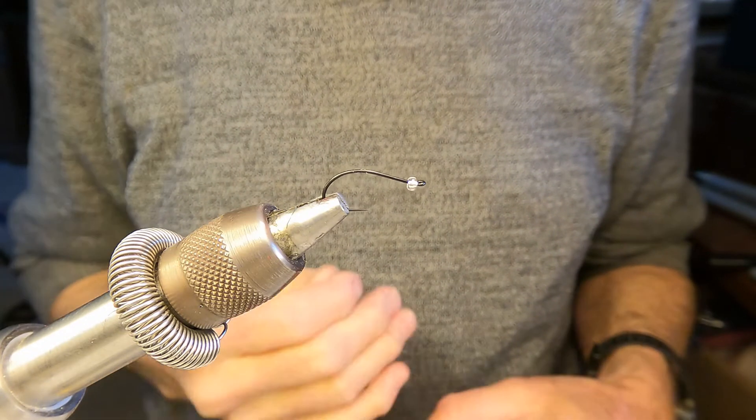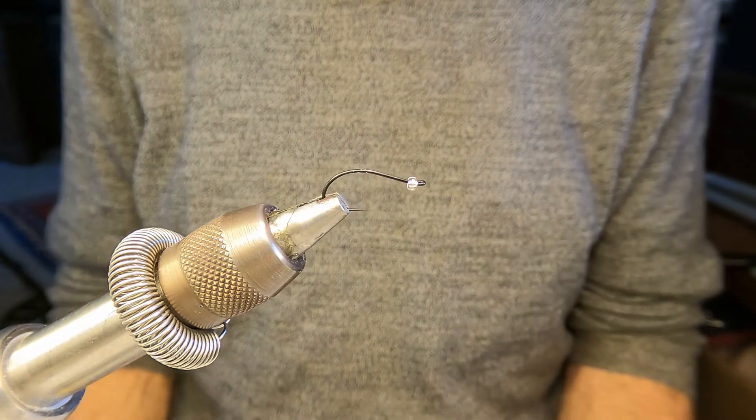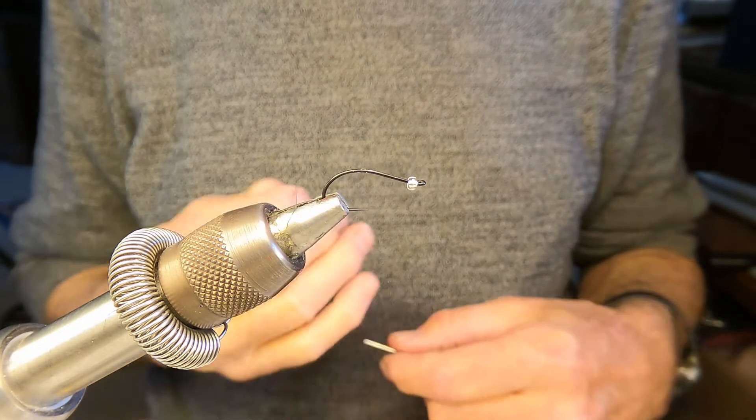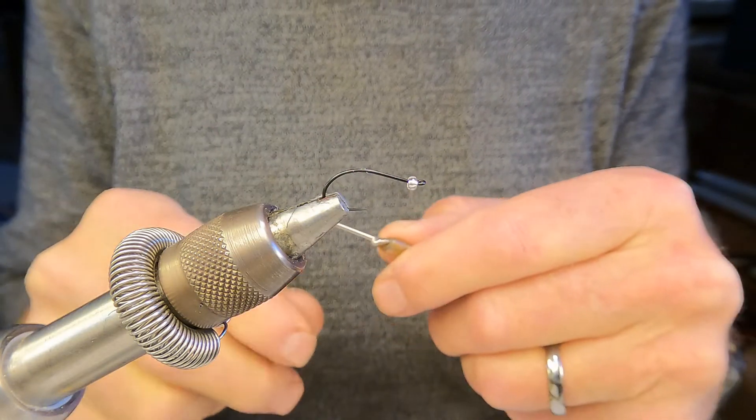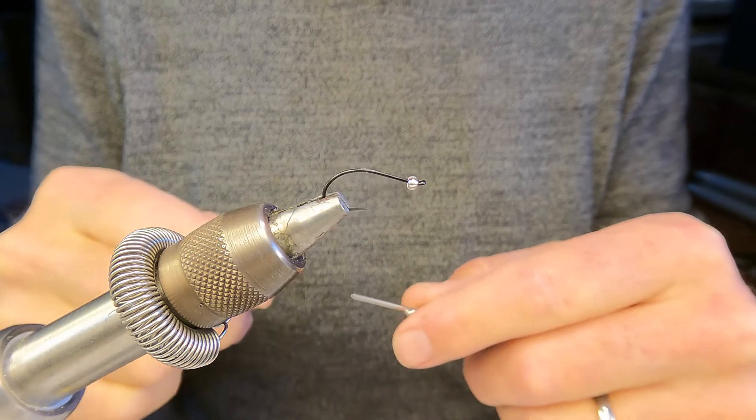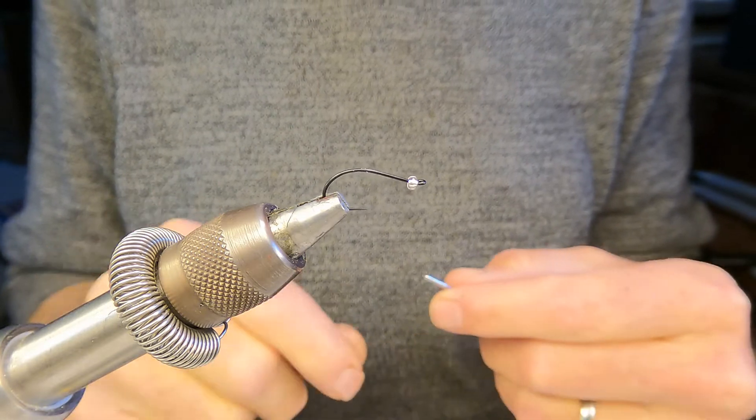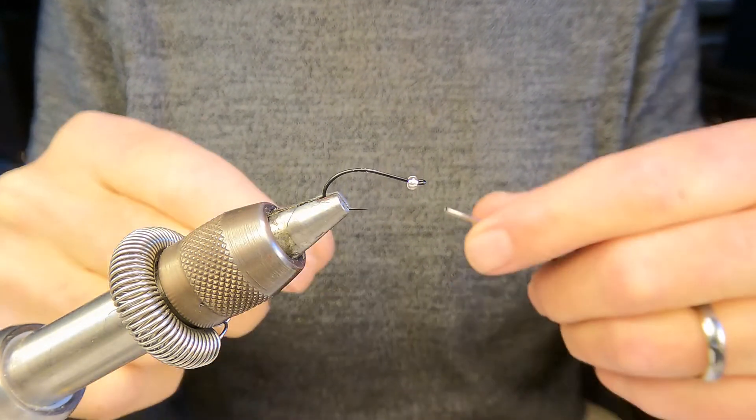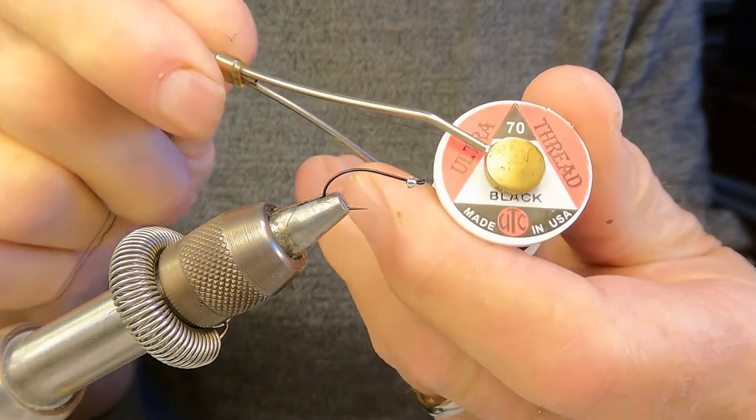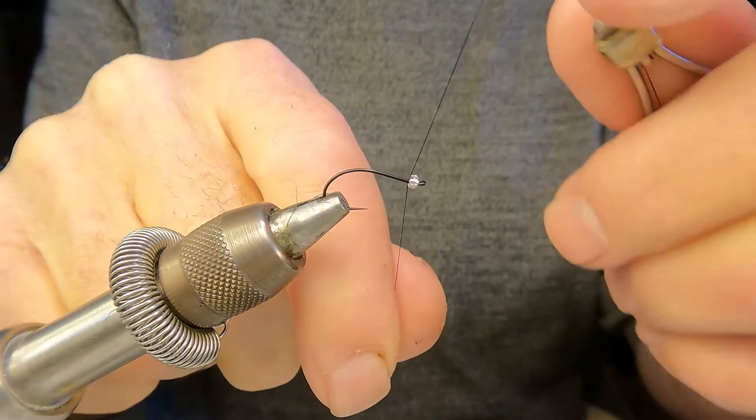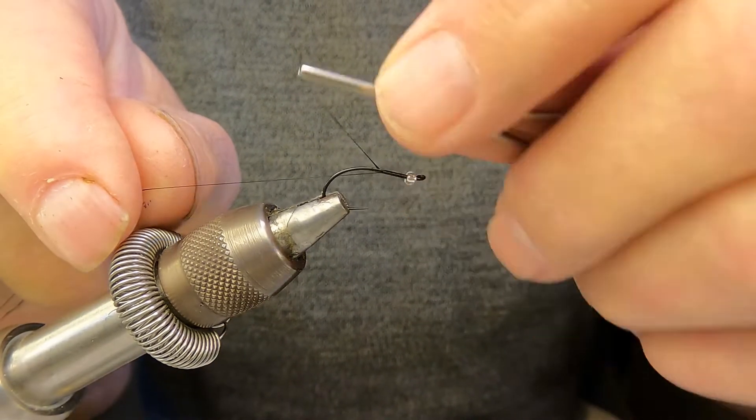This is a reverse tied fly in the mid-range for beetles. Beetles can range from millimeters to many centimeters in size. First, I lay down a thread base of ultra thread 70 denier in black, because we're tying a black aquatic beetle, a plastron beetle. We lay down a thread base over the hook shank to support the foam that we're going to add.